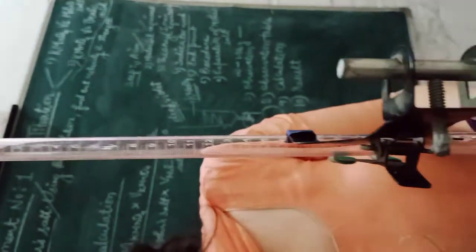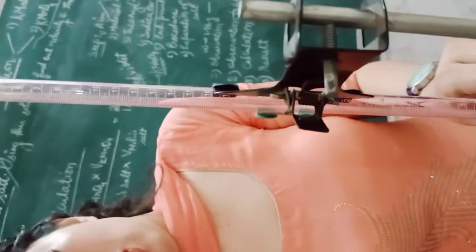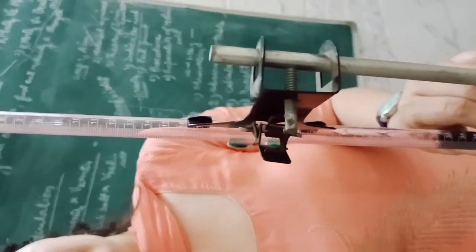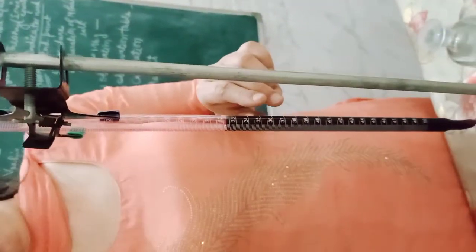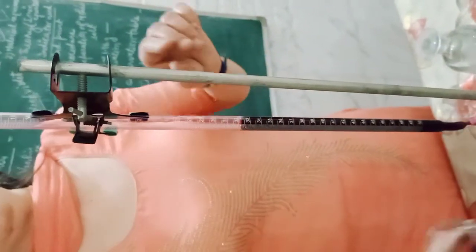The total volume of the burette is 50 ml, so you can transfer and use up to 50 ml of KMnO4 in one go.